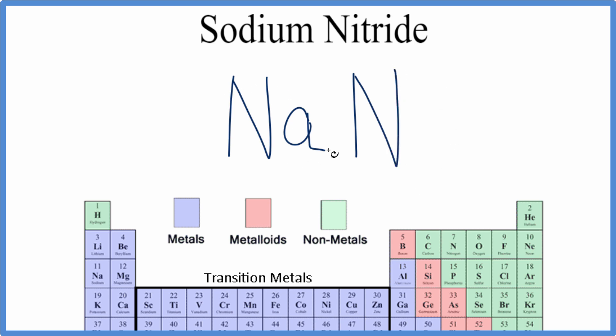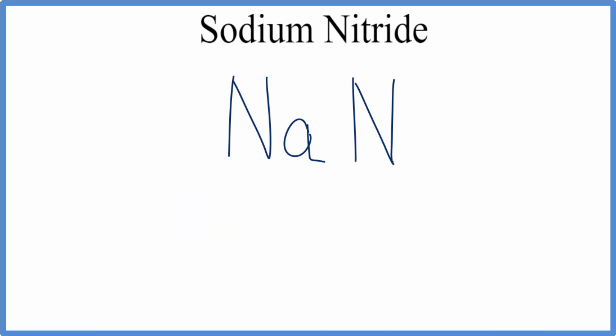We can see we have a metal, the sodium, and a non-metal, nitrogen. Since we have a metal and a non-metal, we have an ionic compound, and we have to balance the charges between the two elements.